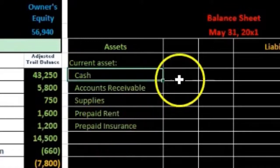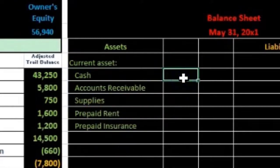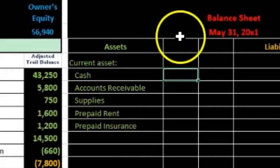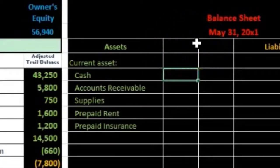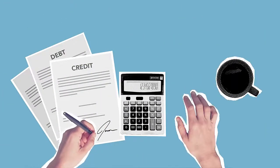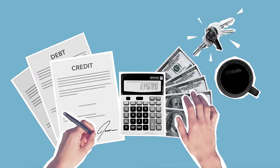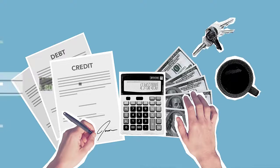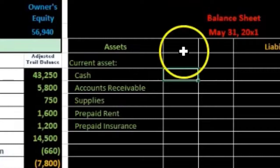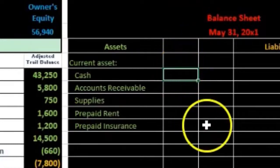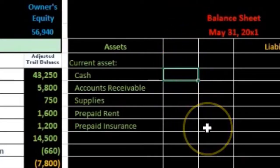The current asset amounts go in the inner column. Note that the two columns here do not represent debits and credits — there are no debits and credits on the financial statements. The inner column is used to group subcategory numbers, which are then summed out to the outer column.